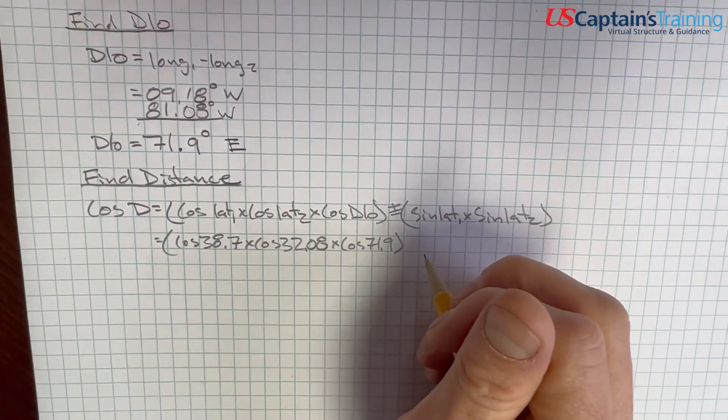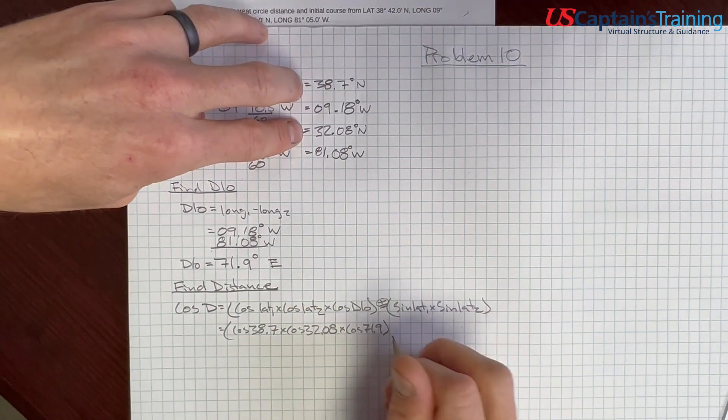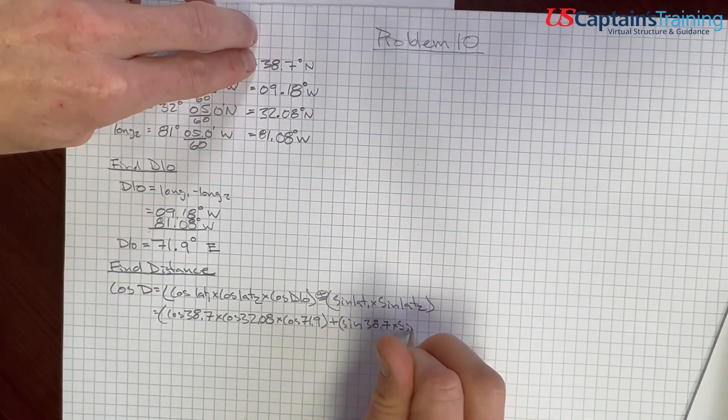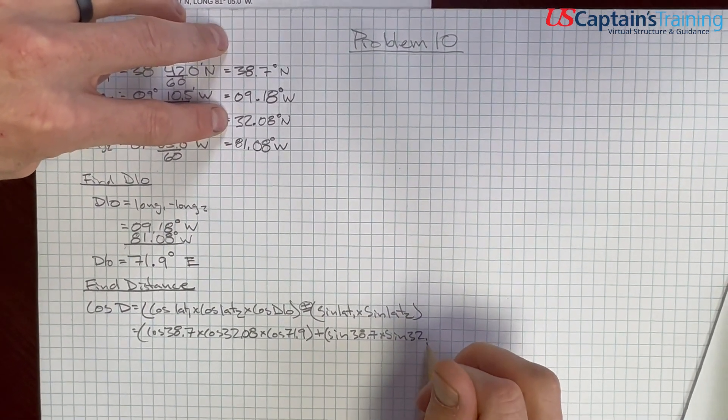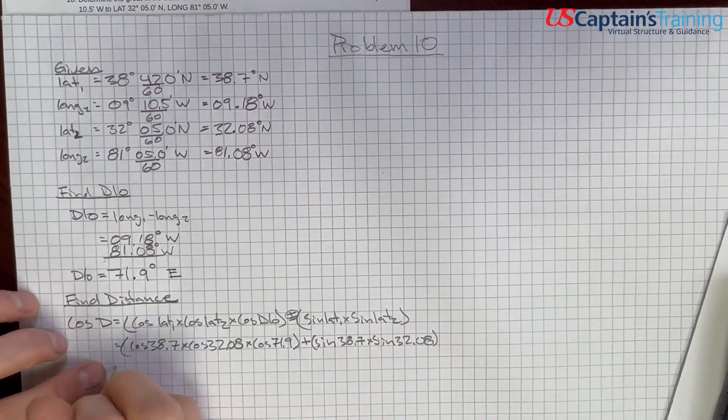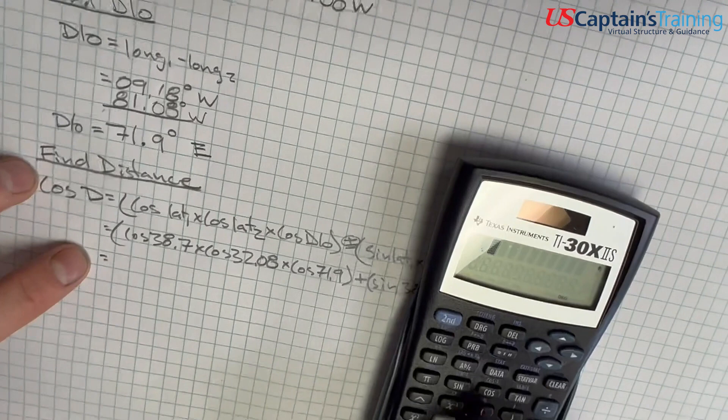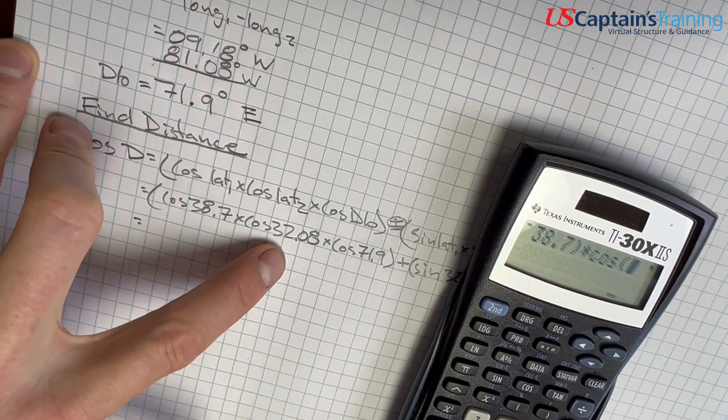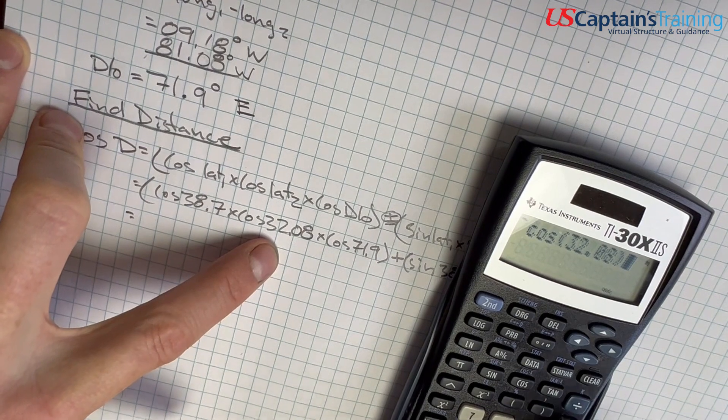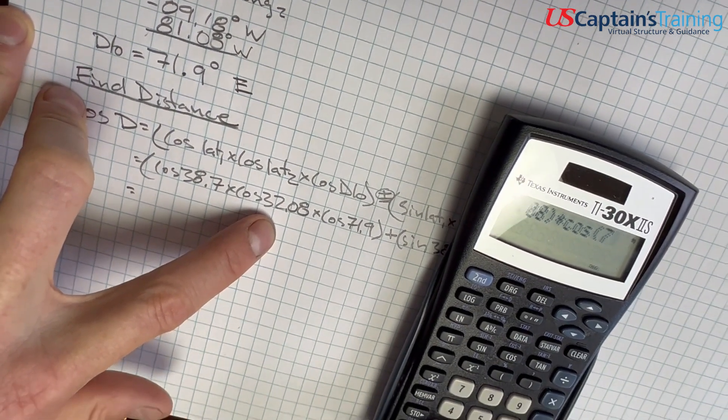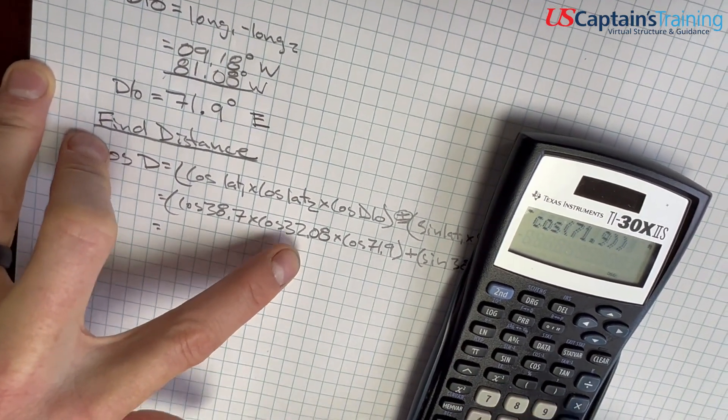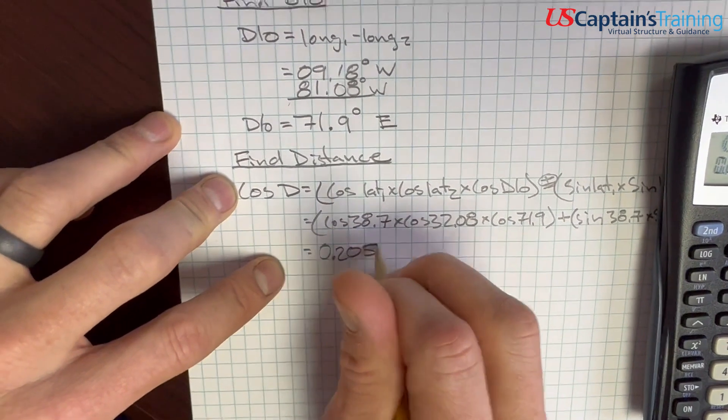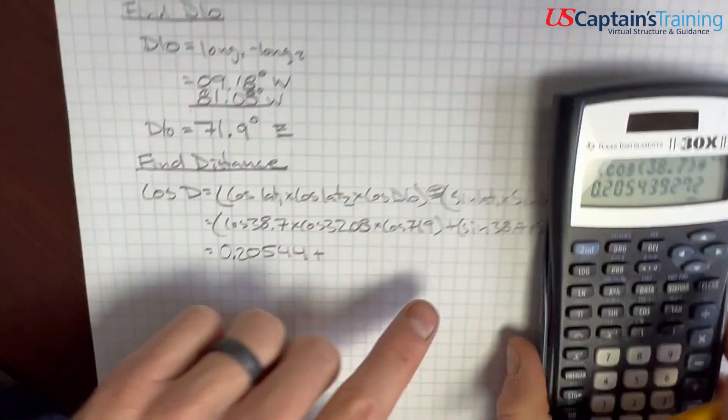And then we did not cross the equator, we're north and north in our lats, so we will use the positive. Plus sine lat 1, 38.7, times sine lat 2, 32.08. And we start plugging these into our calculator. So open the parentheses and say cosine 38.7 close, times cosine 32.08 close, times cosine 71.9 close close enter. 0.20544.